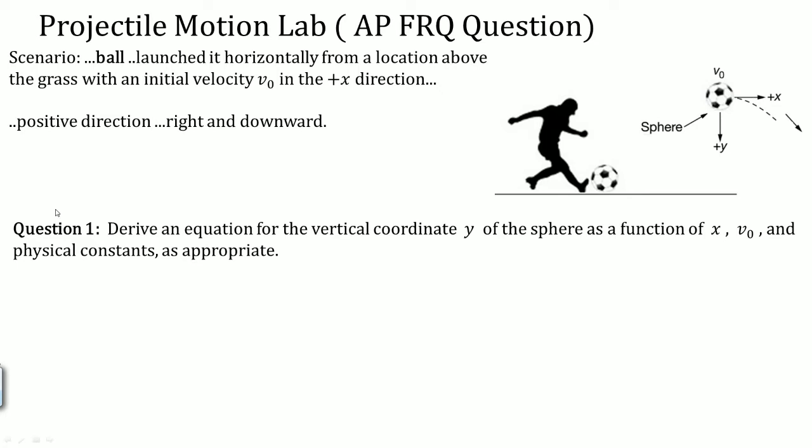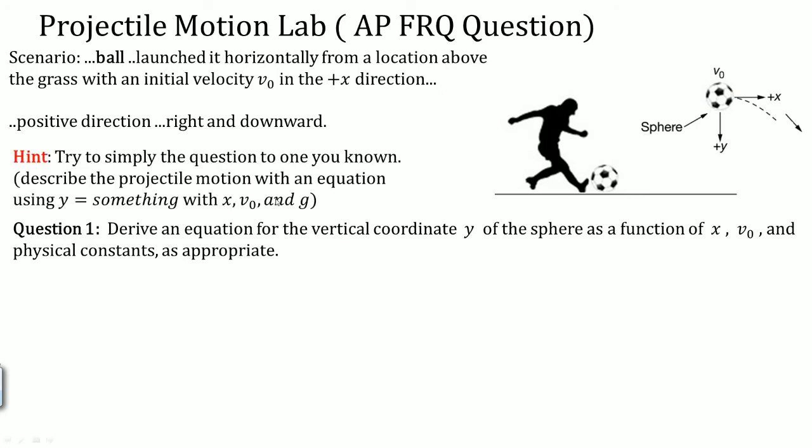When asked to derive an equation for the vertical coordinate y, make sure you simplify the question to something you know. Basically, describe the projectile motion with an equation using y equals something, and that something can only be made up of the variables x, v₀, and g. v₀ stands for the initial velocity.